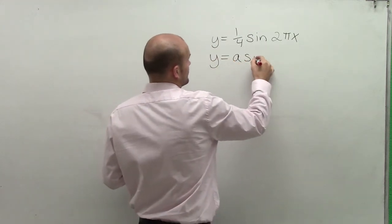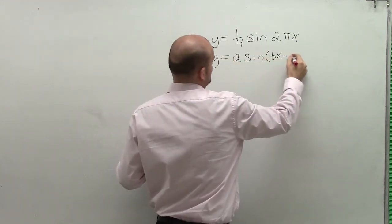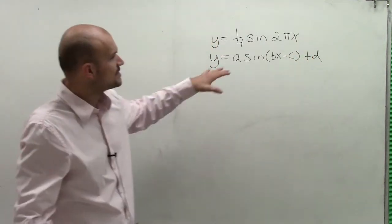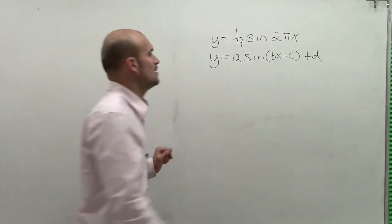For the sine, we had y equals a times sine of bx minus c plus d. So that was our standard form, and there was a couple things that we remembered happening.